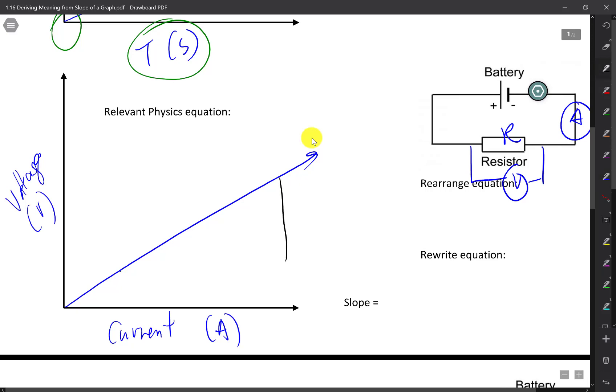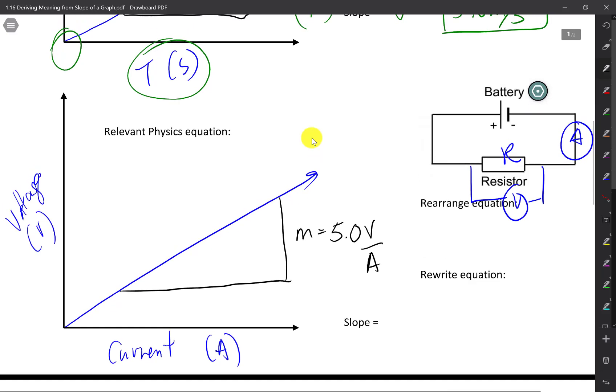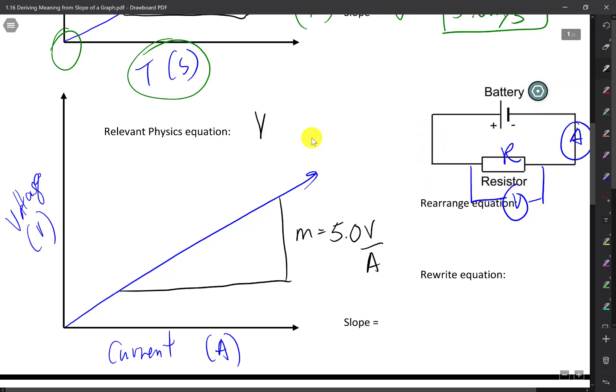So from my graph, I was able to find the slope. And let's say I find the slope was, say, 5. And the units for my slope is V over A. And if I go to my textbook or my notes, I will find that this particular relationship relates to what is called the Ohm's Law. And if you don't remember the Ohm's Law, it's not the end of the world. This is just an example. And Ohm's Law is V equals I R.